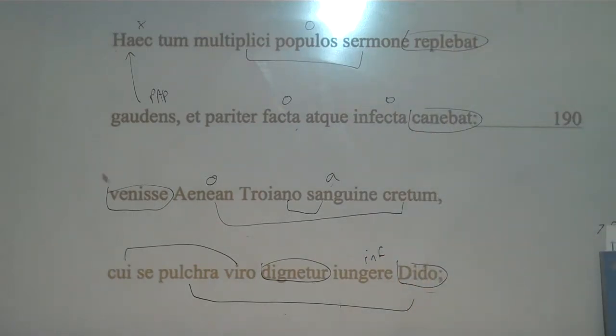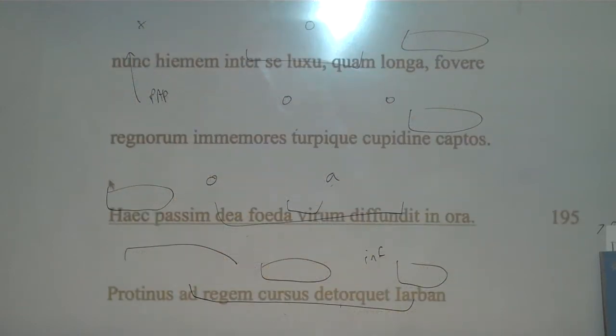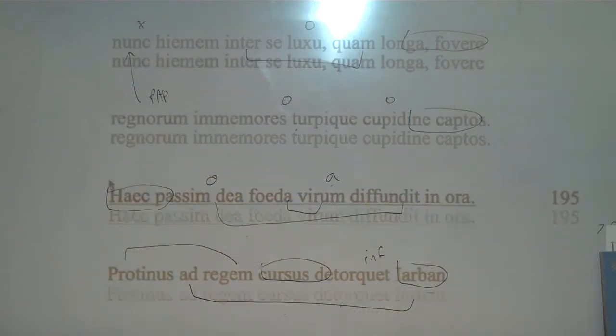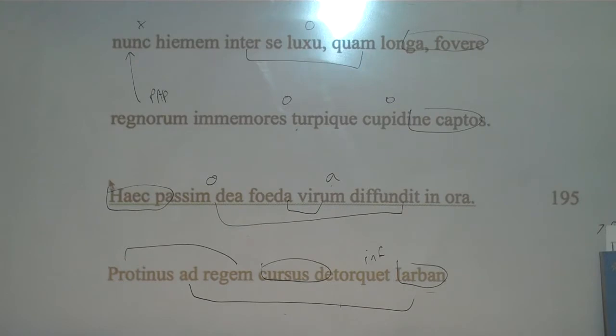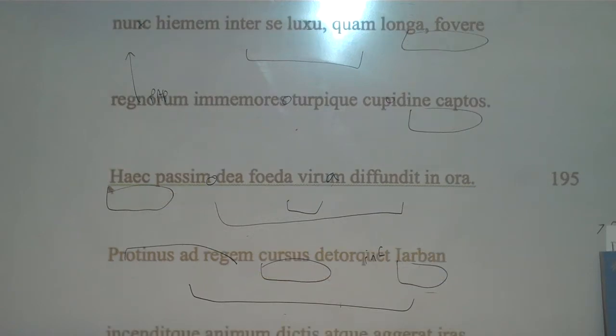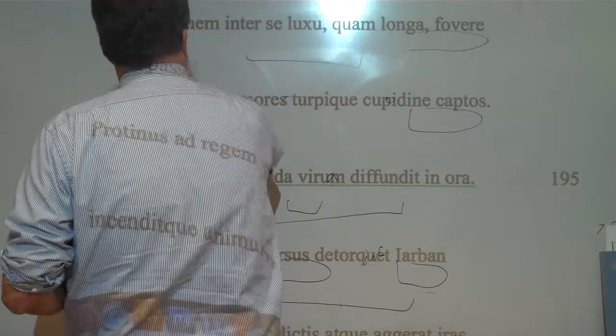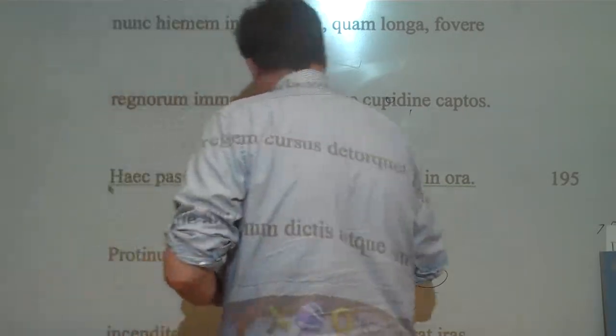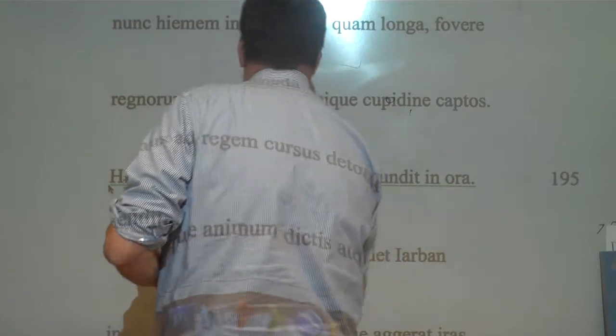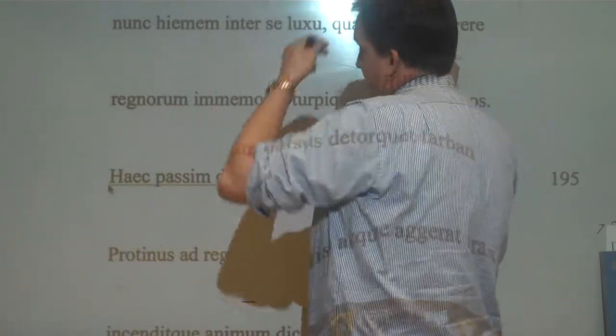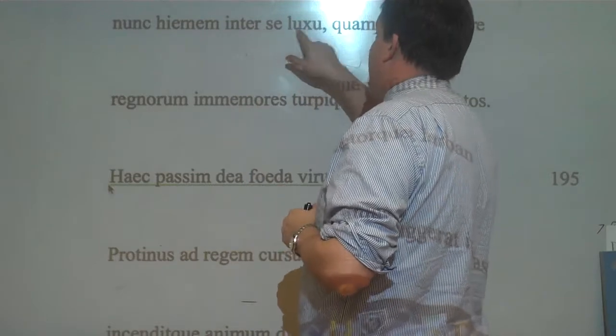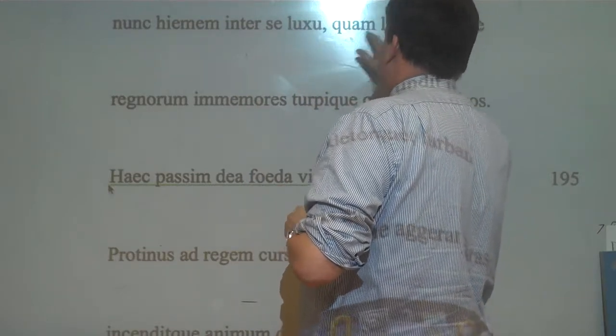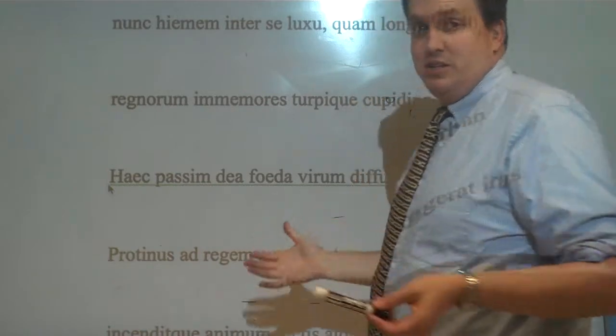Now this you have to unpack a little bit. So if you look here, it says Nochimen, now. This is an accusative of time. Now, for the whole winter. Amongst themselves in luxury. However long it is. So what's been left out here is Dido and Aeneas are the accusative subject. So Dido and Aeneas, Fowere, cherish themselves, now, for the whole winter, among themselves, in luxury, however long it is. As long as it is has been left out.